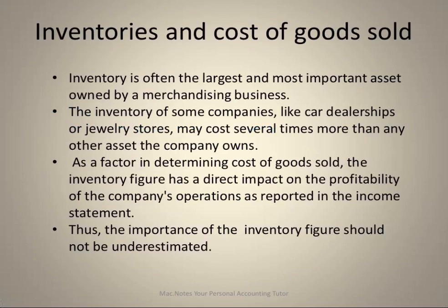To begin with inventories and the cost of goods sold: inventory is often the largest and most important asset of a merchandise company. Some merchandise companies, like car dealers and jewelry stores, have merchandise that is several times more expensive than any other asset that the company owns. As a factor in determining the cost of goods sold, the inventory figure has a direct impact on profitability, and we'll look at that shortly.